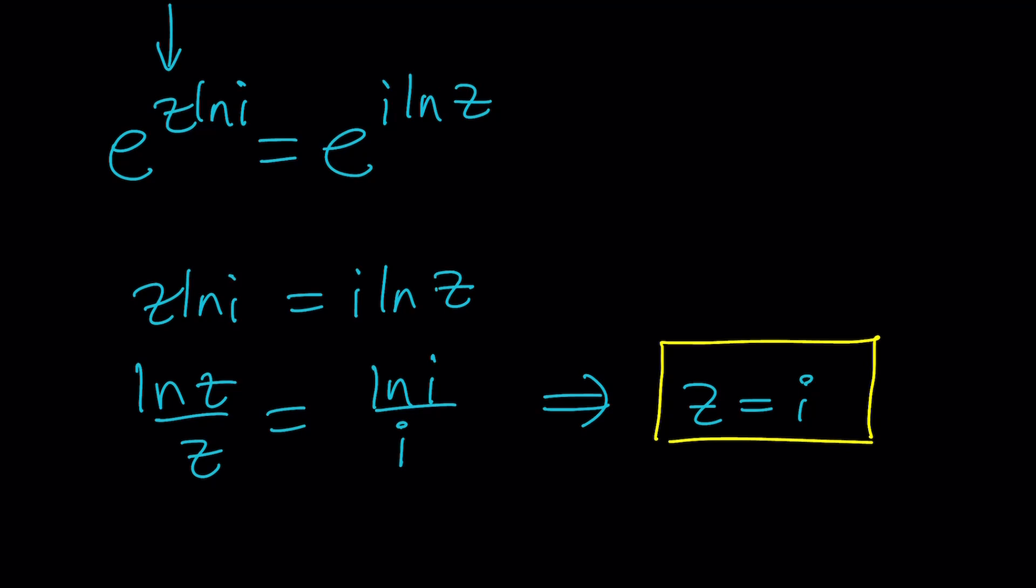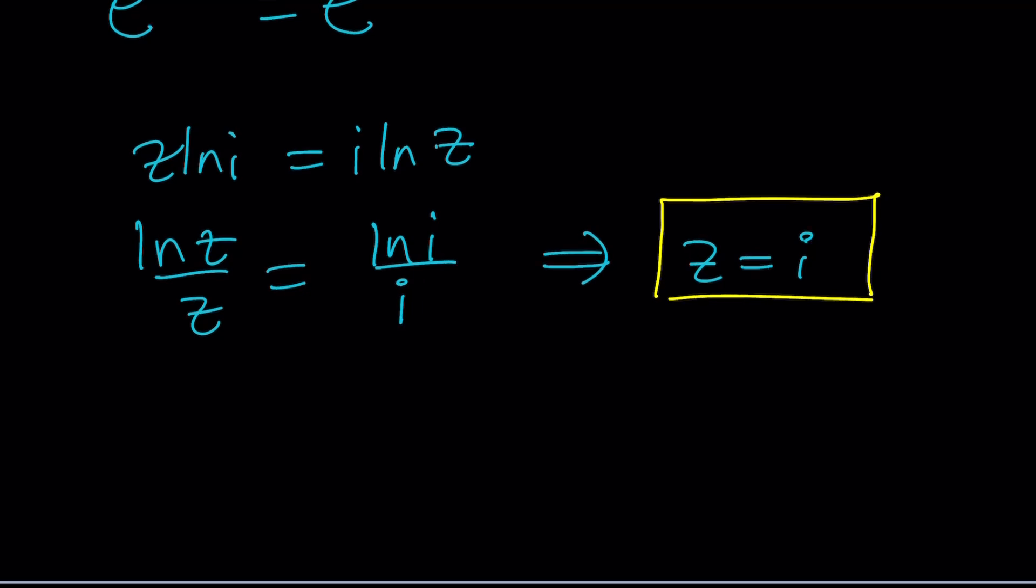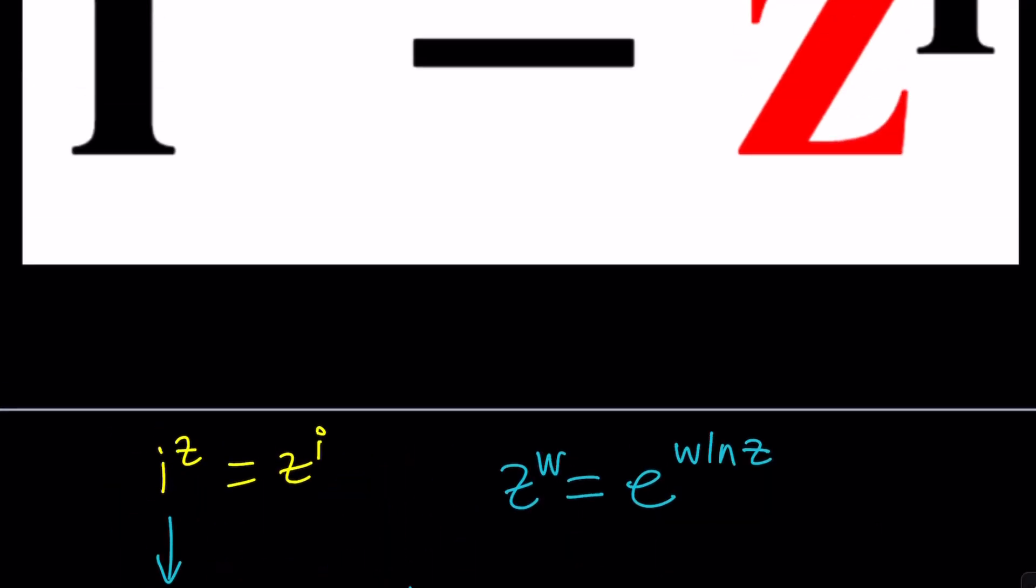And then you can put everything on the same side like ln z over z equals ln i over i. And doesn't that mean that z equals i is a solution? Yes, but that doesn't necessarily mean z equals i is the only solution, right? You probably found that, right? That was kind of obvious.